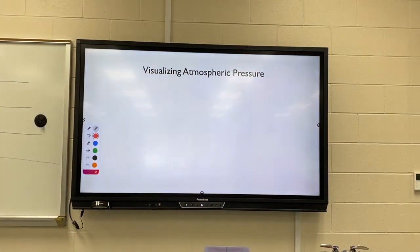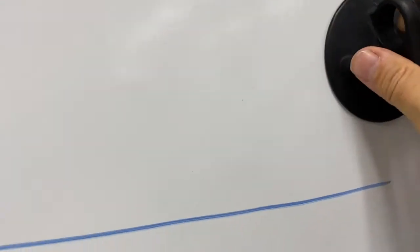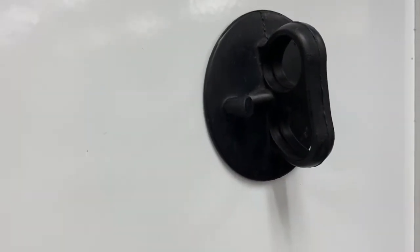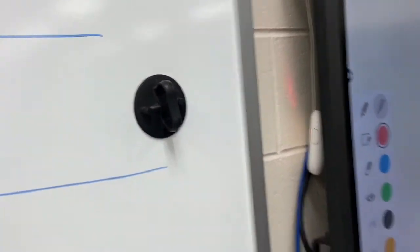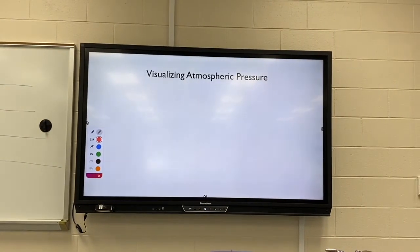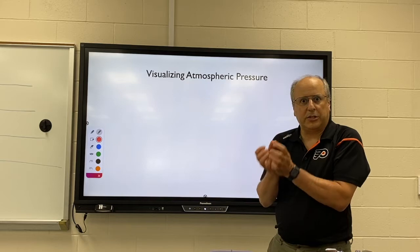Realize that it's not just pushing down — the atmosphere is pushing in all directions. Here's a suction cup: when I try to pull it off the board, it's pretty hard to do. When I push the suction cup on, I get rid of the air between the suction cup and the board, and now the atmosphere is pushing the suction cup against the board. I have to overcome that atmospheric pressure to pull it off, and it's not easy. There are lots of ways to visualize and experience this pressure from the atmosphere.